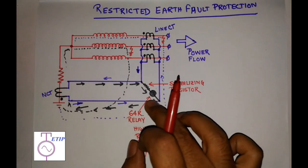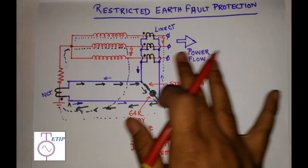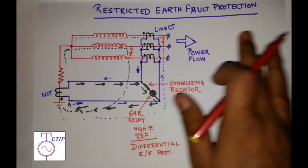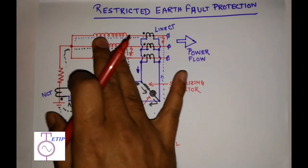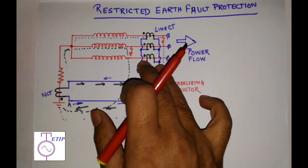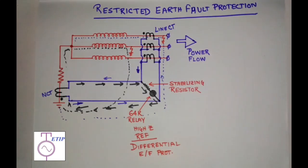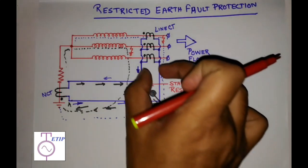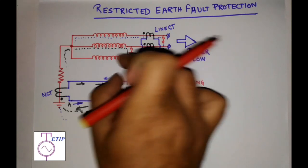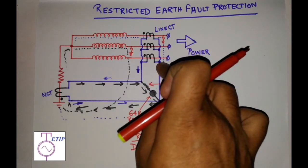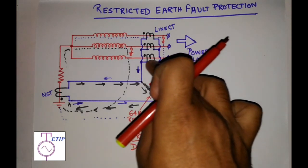The stabilizing resistor is kept to prevent the relay from operating for any fault outside the protective zone. Suppose a phase fault or a through fault has occurred outside the protective zone — a huge current will flow through the line CT. There will be a saturation voltage accumulated across the CTs. This voltage may be adequate enough to drive a current through the relay coil and cause the relay to maloperate.